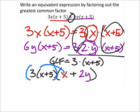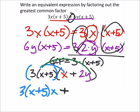So I would have 3(x+5) times x, and then I would have this added to, and I'll distribute again what's in those blue parentheses to this 2y. So 3(x+5) times 2y, like this, like this.